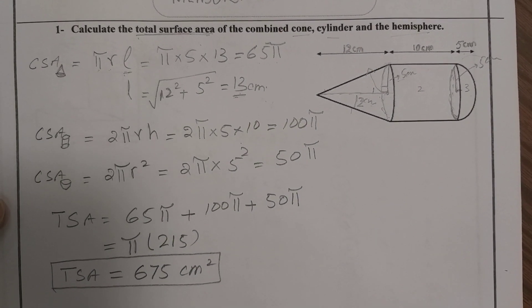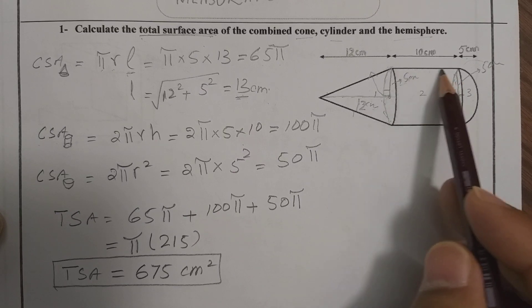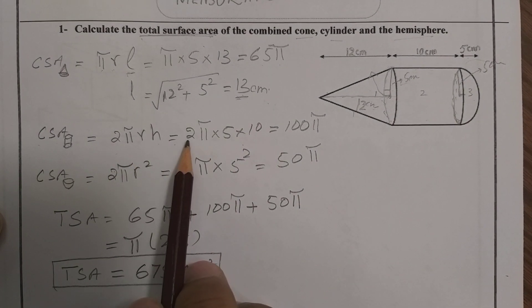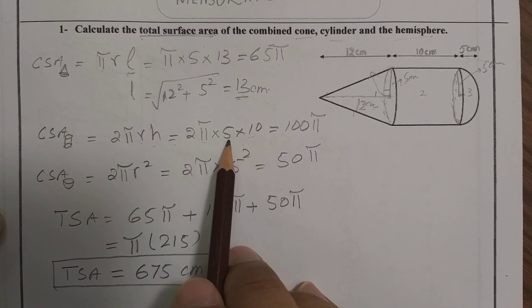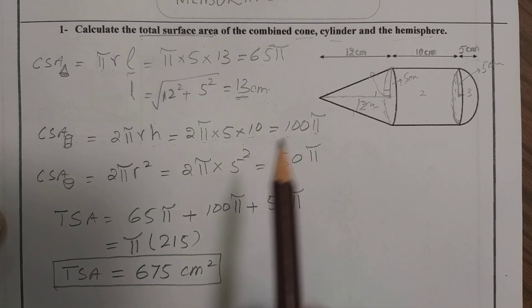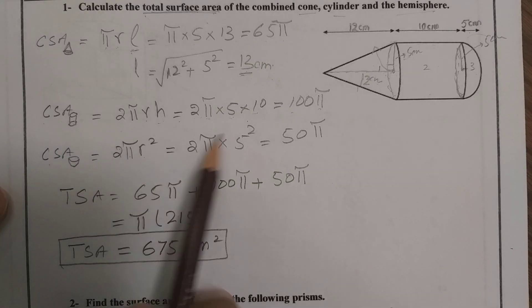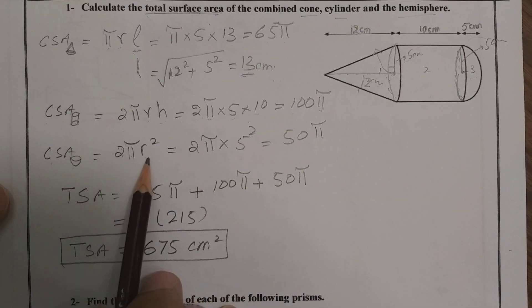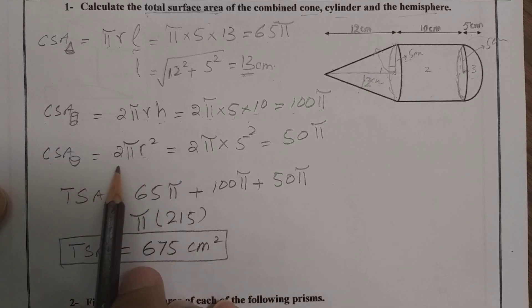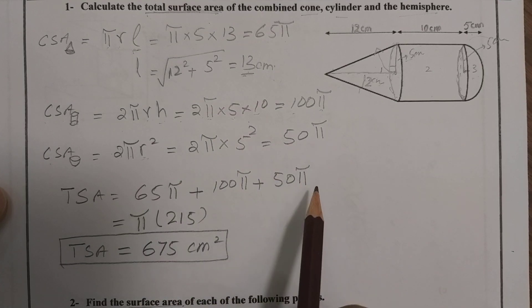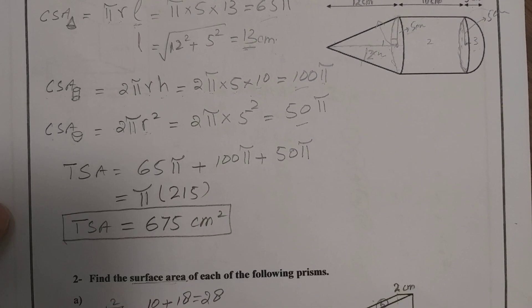Now find the curved surface area of the cylinder, which is 2πrh. With r = 5 and h = 10, that gives 2 × π × 5 × 10 = 100π. Next, find the curved surface area of the hemisphere, which is 2πr². The full sphere surface area is 4πr², so the hemisphere is half of that: 2πr². With r = 5, that gives 2 × π × 25 = 50π.